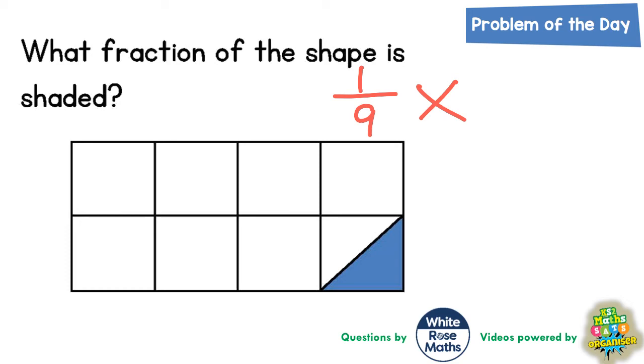But what we could do is split all of the squares into two triangles, which would then make all of the pieces exactly the same size.